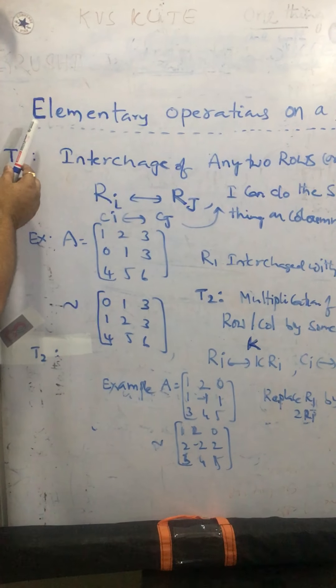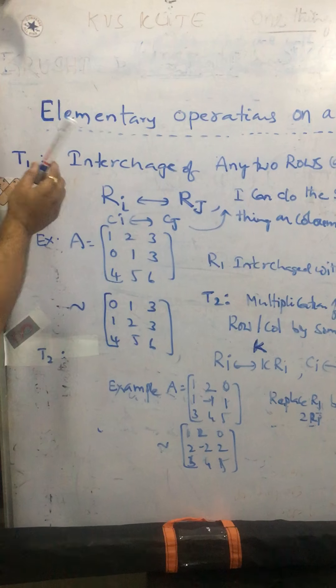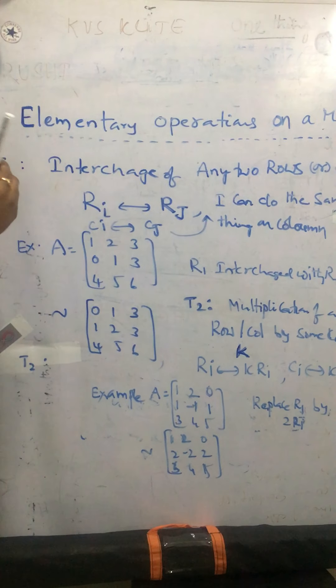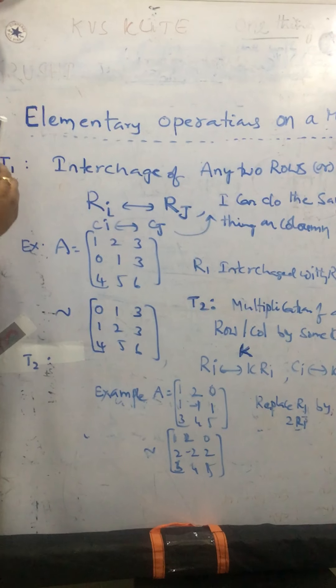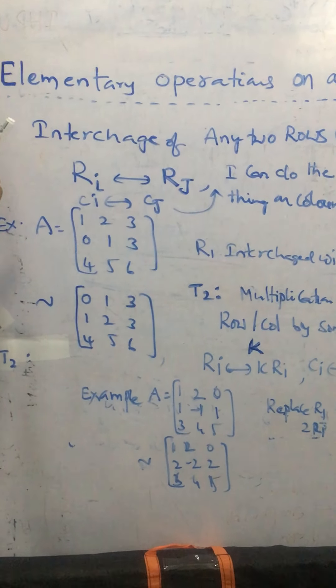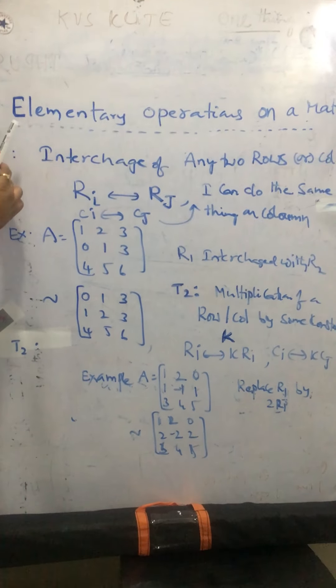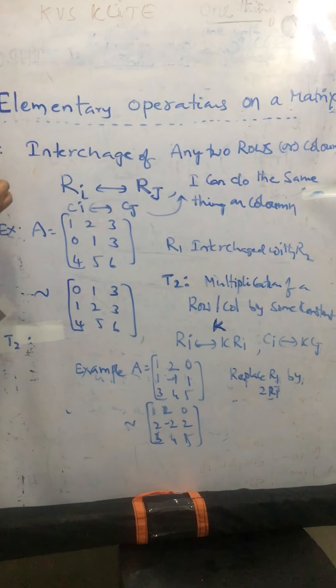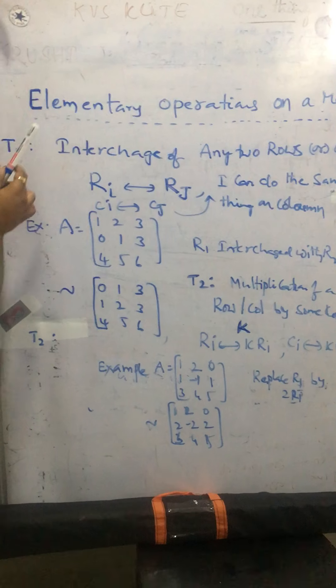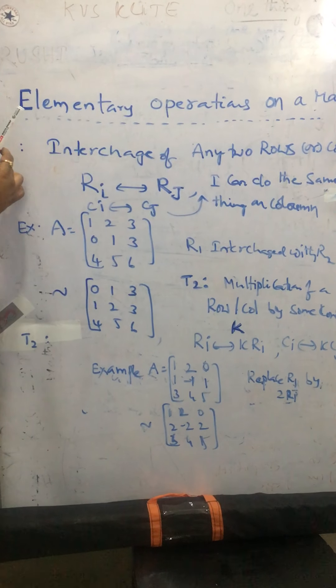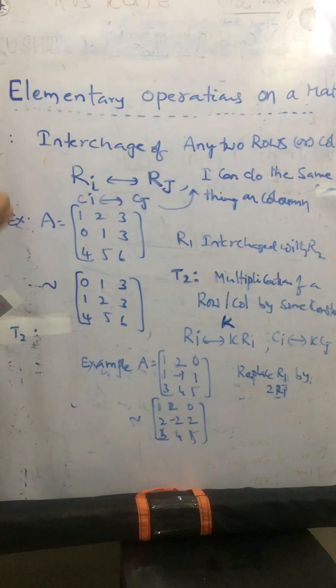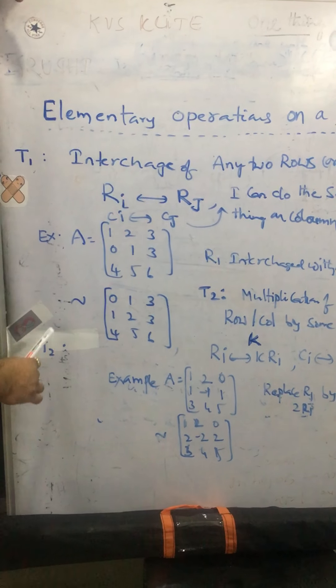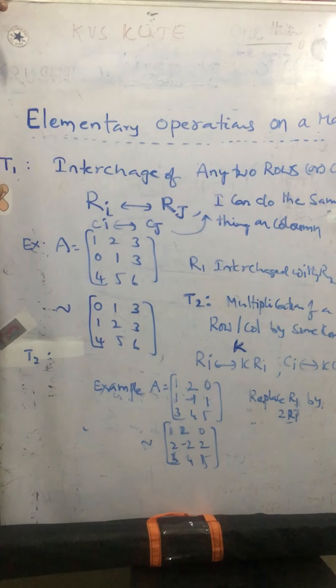So here is elementary operations on a matrix. So what is the importance of elementary operations on a matrix? They are very useful to find inverse of the matrix and also it helps a lot while solving system of equations without using elaborate calculations. So today I would like to bring three important elementary operations on a matrix. I am giving as a symbol, transformation 1 and transformation 2. Third one is transformation 3.